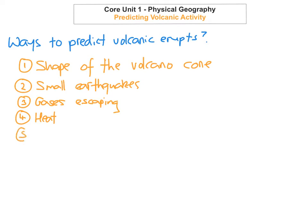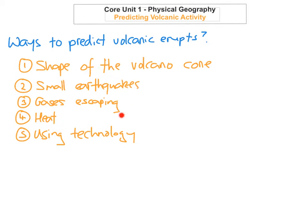The fifth way is by using technology, which links in to everything we've already said. Scientists are using lots of technology to try to predict eruptions. One thing they use is seismometers to record any earthquakes. If there's any seismic activity or changes, this will be triggered and monitored by the seismometers. Any sudden increase in the number or strength of these tremors can indicate that an eruption may occur.